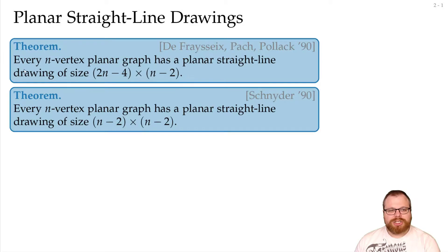In the previous lecture we learned about the algorithm by de Fraysseix, Pach and Pollack, which gives us a drawing on a grid of size 2n-4 times n-2, which can also be improved to n-2 times n-2. And today we will have a look at this second theorem.